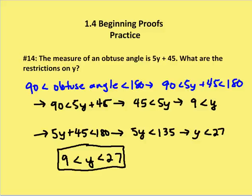Well, I know that the equation for the obtuse angle in question is 5y plus 45. So I can rewrite the inequality as 90 is less than 5y plus 45, which is less than 180 degrees. Now I can solve that inequality.